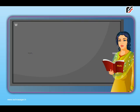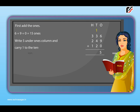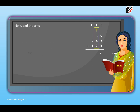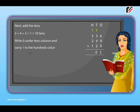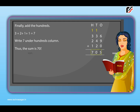Adding 3 numbers. We add 3 numbers in the same way as we add 2 numbers. For example, to add 336, 249, and 120: first add the ones — 6 plus 9 plus 0 is equal to 15 ones. Write 5 under the ones column and carry 1 to the tens column. Next add the tens: 3 plus 4 plus 2 plus 1 is equal to 10 tens. Write 0 under the tens column and carry 1 to the hundreds column. Finally add the hundreds: 3 plus 2 plus 1 plus 1 is equal to 7. Write 7 under the hundreds column. Thus, the sum is 705.